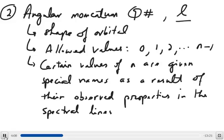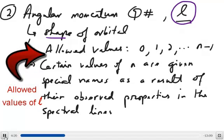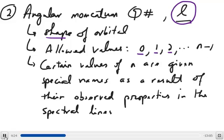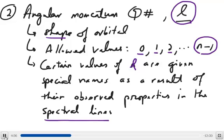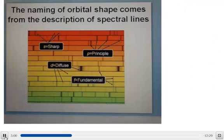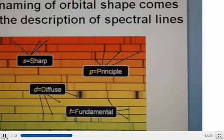The second quantum number is called the angular momentum quantum number, symbol L. It represents the shape of the orbital and has only certain allowed values starting from 0, then 1, 2, 3, and so on, up to a maximum of n minus 1 — so L depends on n. Certain values of L are given special names based on how their properties appear in spectral lines.